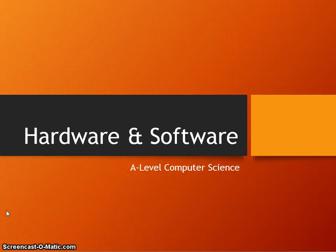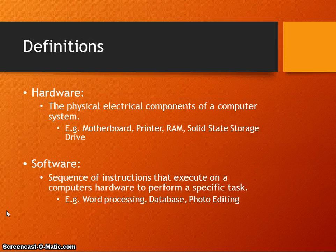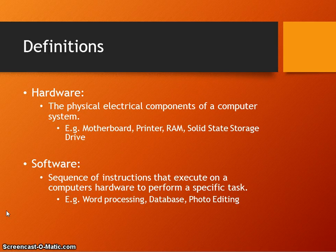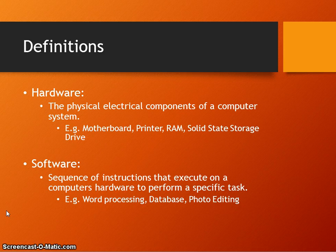In this video we're going to look at hardware and software. Hardware is the physical electrical components of a computer system. Examples of typical hardware components are motherboard, printer, RAM, and solid-state storage. We say hardware are the things that we can see and touch, but the actual definition is the physical electrical components of a computer system.